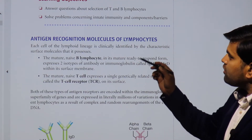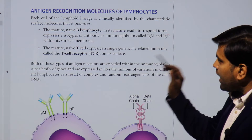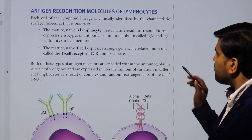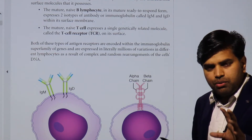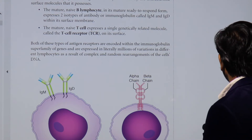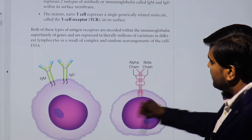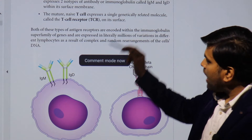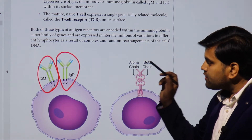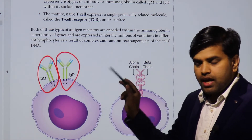Each lymphoid lineage is identified by characteristic surface molecules. The naive B lymphocyte, when mature and ready to respond, expresses two isotypes of immunoglobulin on its surface: IgM and IgD. These immunoglobulins serve as receptors on the B cell surface — that is, IgM and IgD are incorporated as the B cell receptor (BCR).